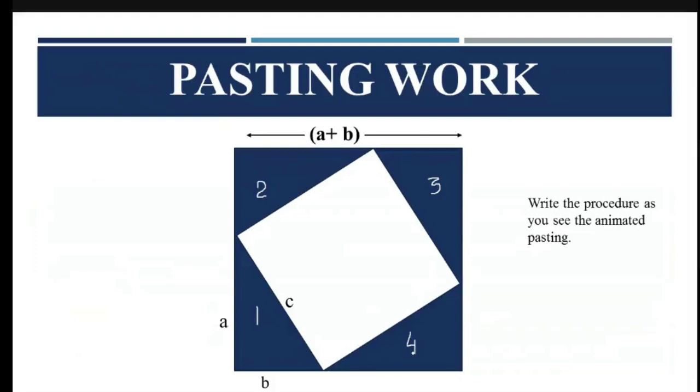Four of them are congruent of sides A and B. The area of each triangle is ½ × base × height, that is ½AB. Since we have four of them, area becomes 4 × ½AB = 2AB. The next figure we have is this square of side C. So this is the fifth figure. The complete square is enclosing five different figures: four congruent triangles and one square.